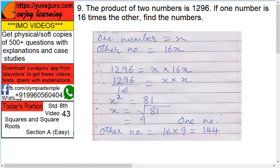The product of two numbers is 1296. If one number is 16 times the other, find the numbers. There are two numbers and the product is 1296. Now one number is 16 times the other.